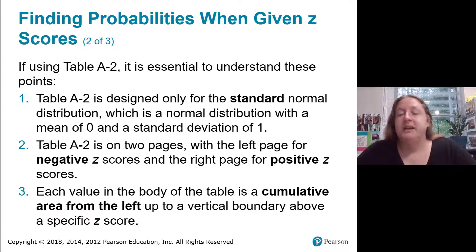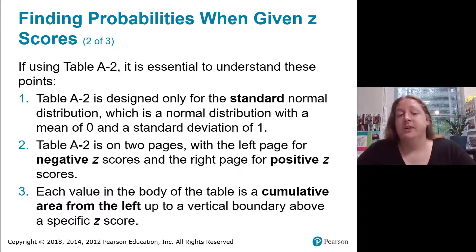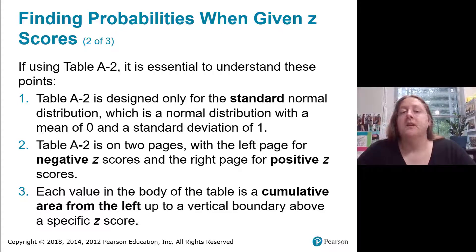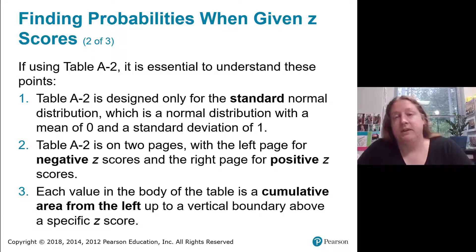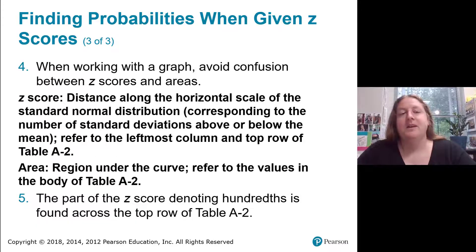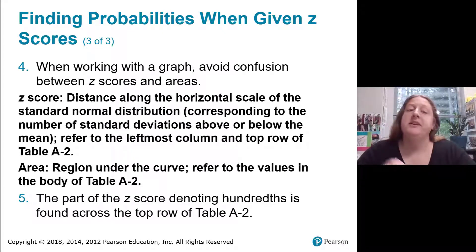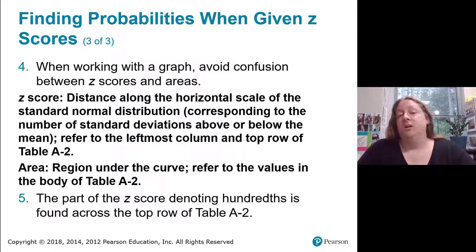In table A2 you'll see pages for positive and negative z-scores. Each value in the body of the table is a cumulative area from the left up to a vertical boundary above a given z-score. That area corresponds to the probability that the z-score is less than that given z-score. When working with the graph, it's incredibly important to avoid confusion between z-scores and areas — areas correspond to probabilities, while z-scores are the boundary values.